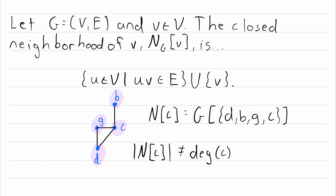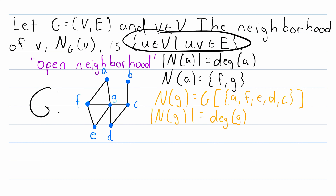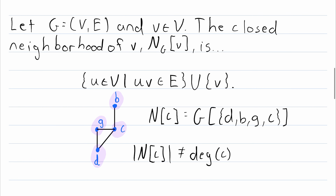Remember, unless otherwise stated, a neighborhood is assumed to be open and is written with parentheses notation. The neighborhood of a vertex is either defined as the set containing all vertices adjacent to that vertex, or as the subgraph induced by that set of adjacent vertices. We could also talk about closed neighborhoods, which have similar notation but with square brackets instead of parentheses. Closed neighborhoods contain the vertex that the neighborhood is being evaluated at.